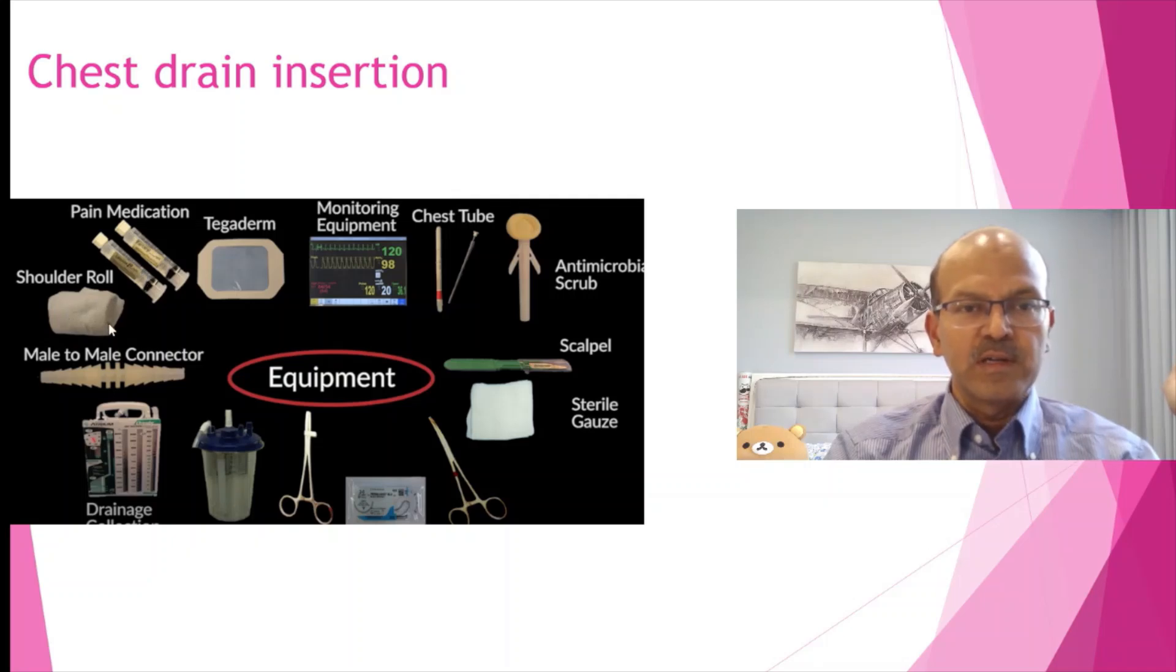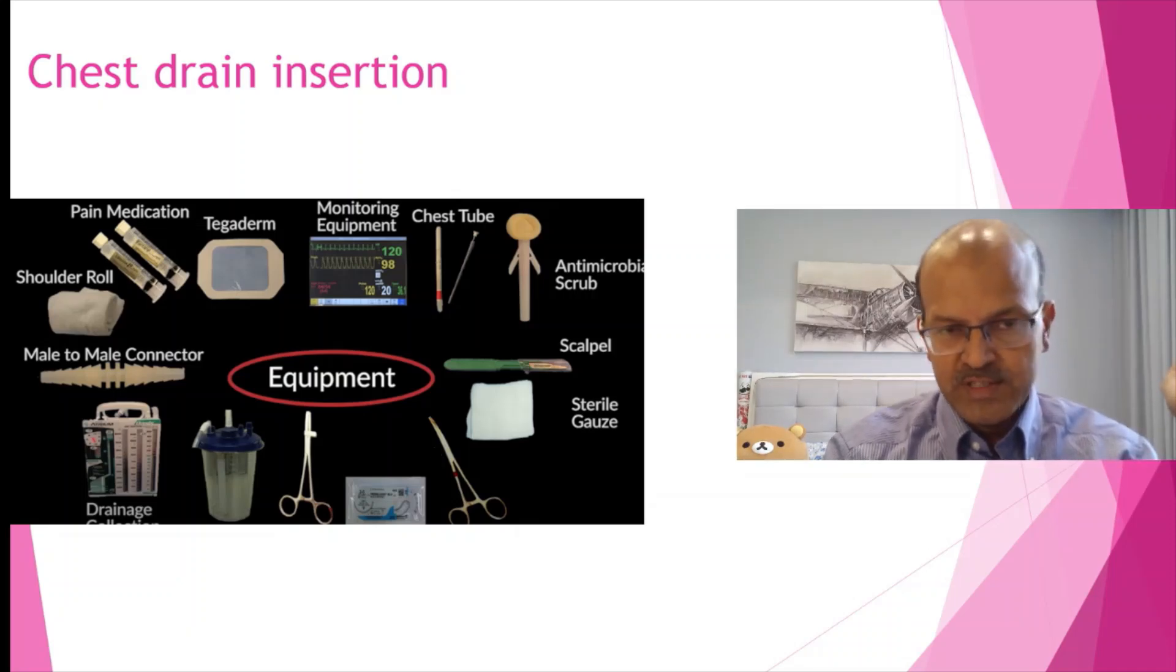The shoulder roll will help slightly tilt the chest upward. The direction of the chest drain should always be going anterior. When you insert the chest drain, direct it anteriorly. If you are using the artery forceps to direct it in, hold it in such a way that the beveled edge is up so that it goes anteriorly. A chest drain going posteriorly is one of the reasons why the lung may compress on it and may not drain subsequently.